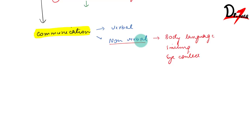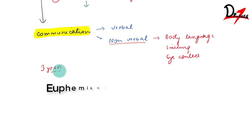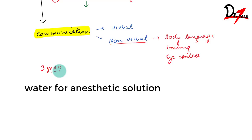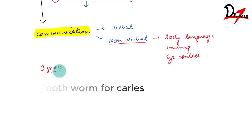Verbal communication works best if the child is more than three years of age, because a younger child will not understand well. You can compliment the child on his appearance or ask about his likes, dislikes, favorite cartoon, and so on — while maintaining eye contact. Also use euphemisms: substitute words like 'water' for anesthetic solution, 'tooth bug' for caries, 'raincoat' for rubber dam, and 'clicking a picture of your teeth' for radiograph.